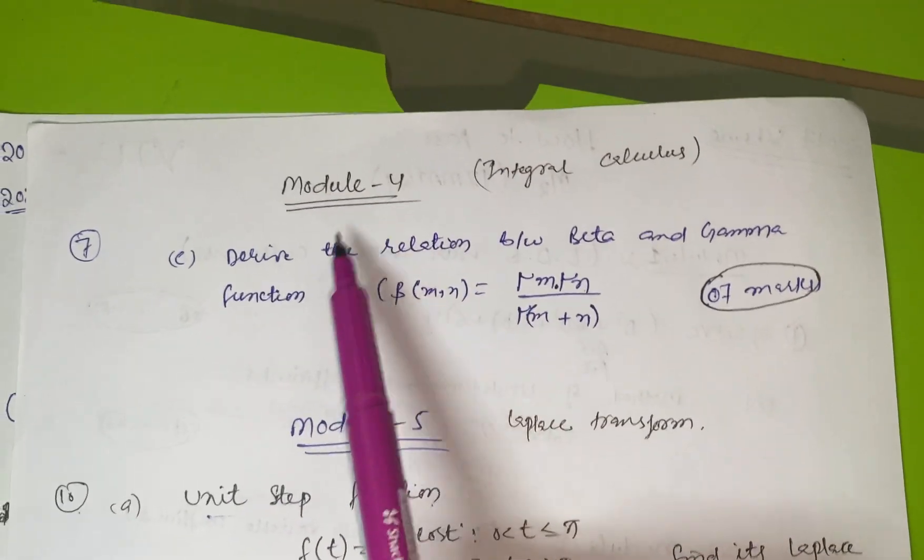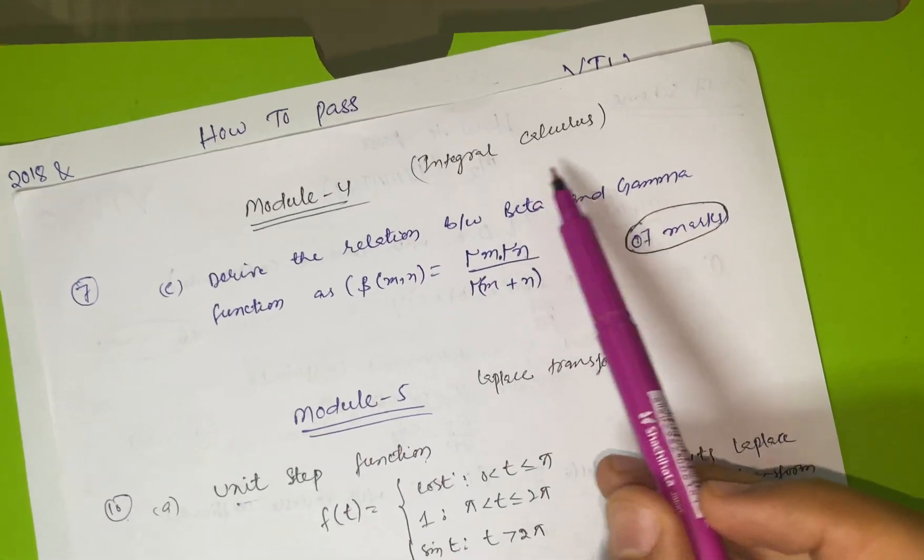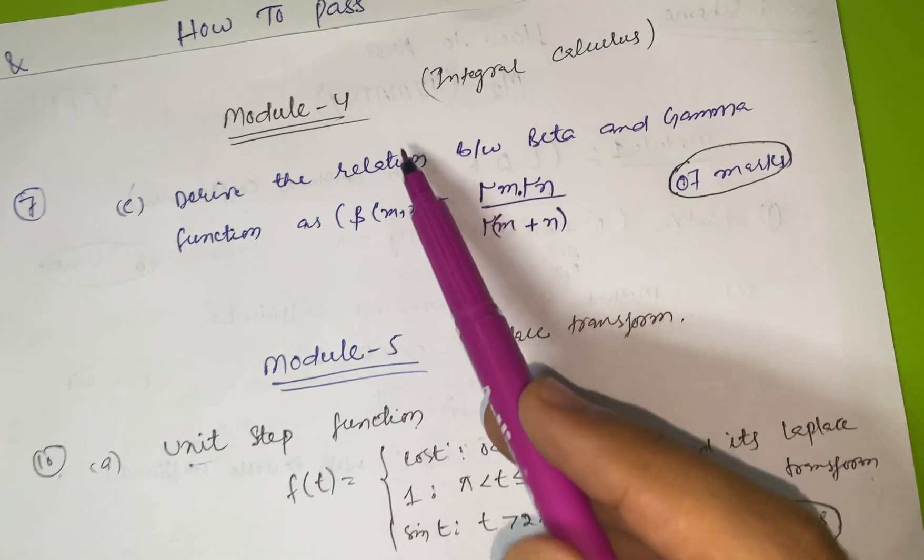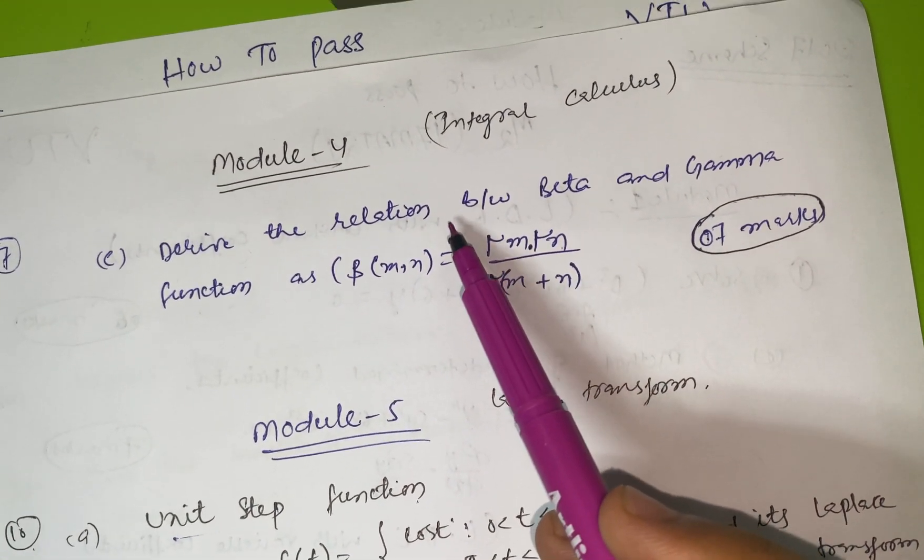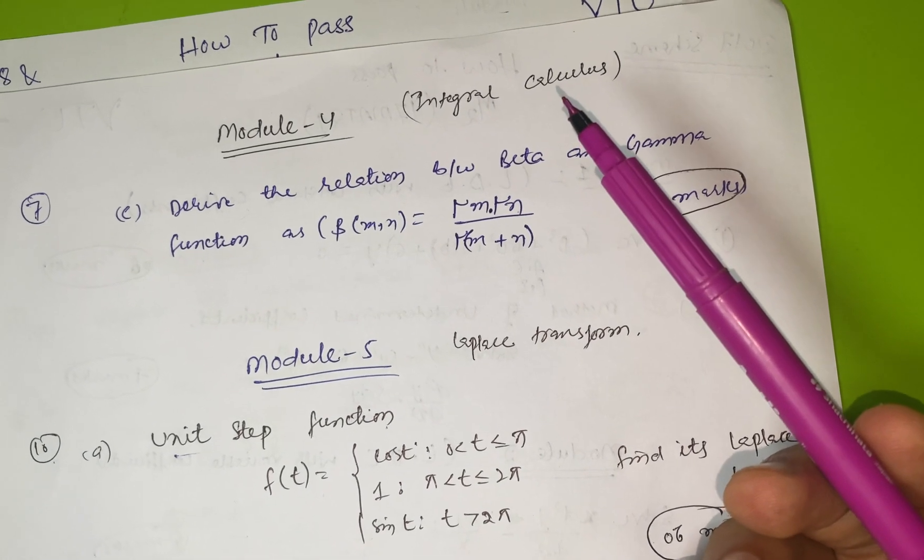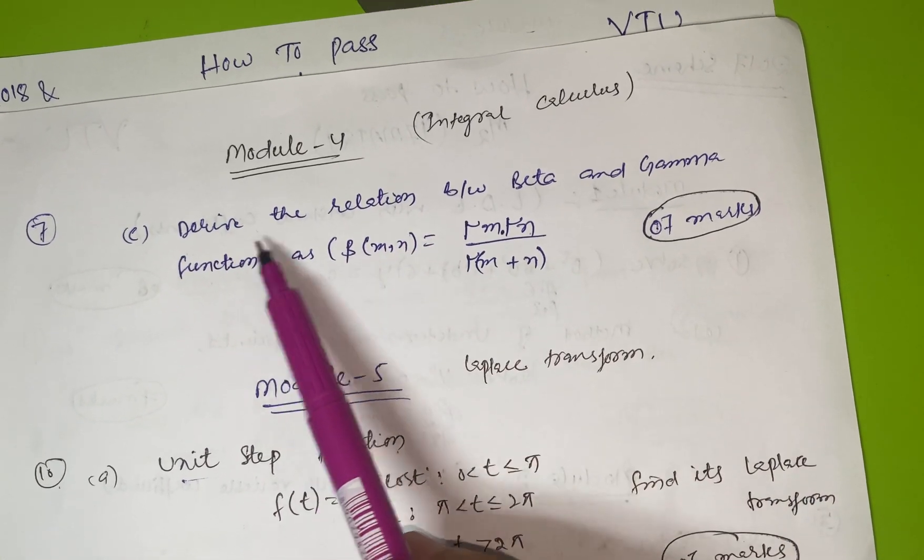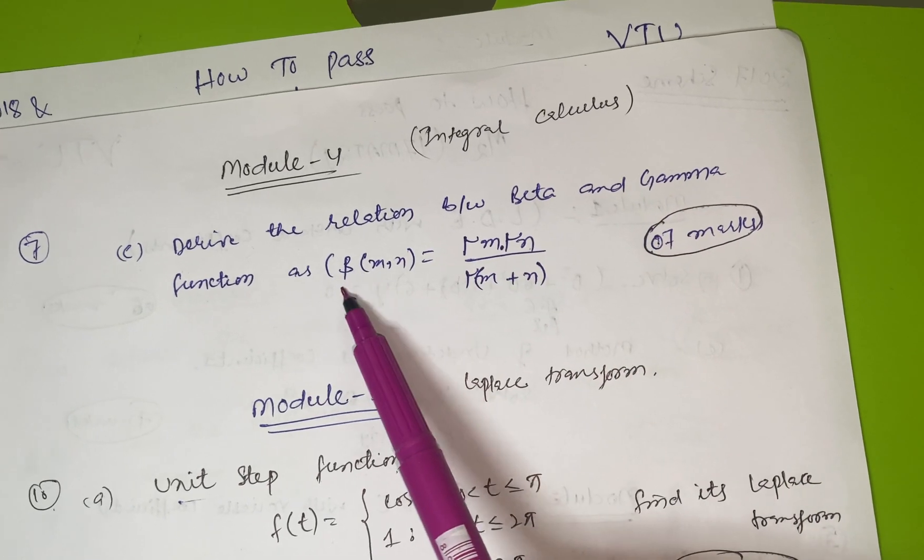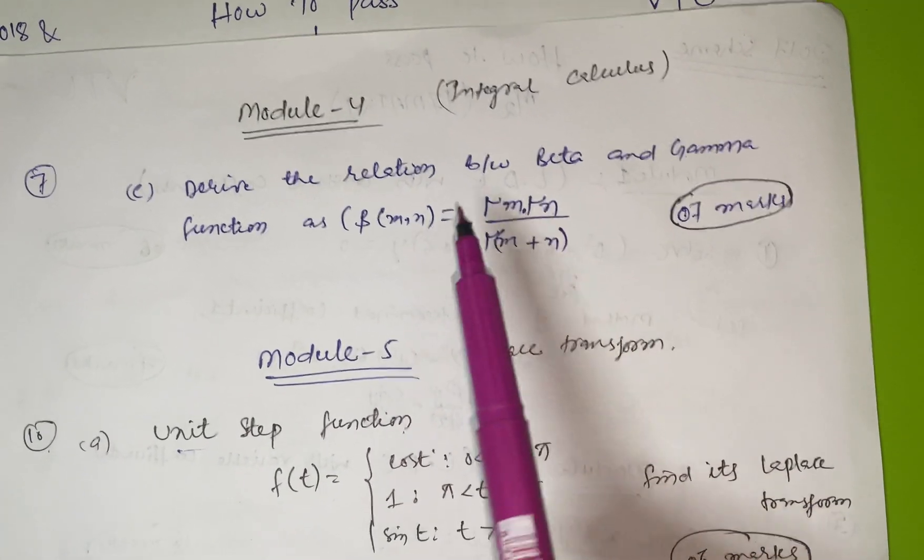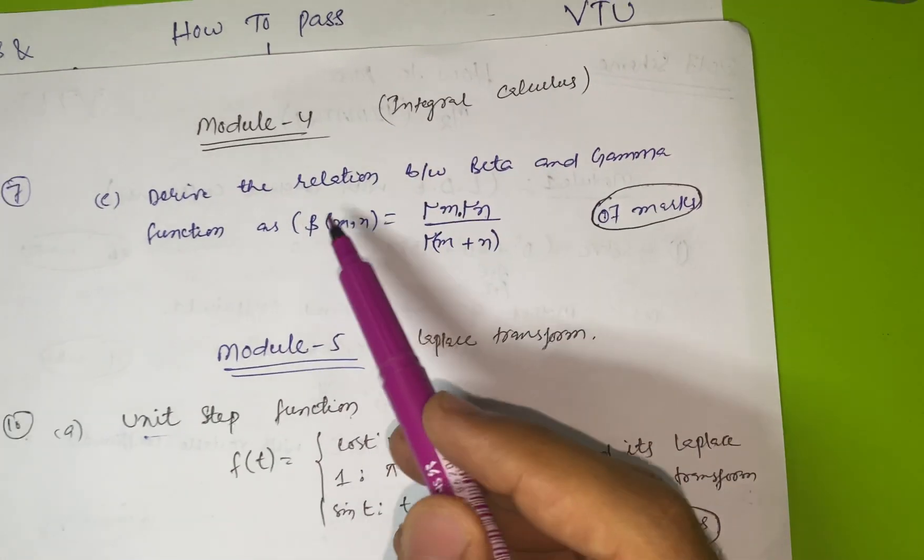Then come to Module 4. There are two parts, one is integral calculus. In this part there are two topics: double and triple integration, but I haven't written it here because it's a typical topic for some students. I've taken one part, that is gamma function. It's always asked in VTU examination: derive the relation between beta and gamma function as β(m,n) = Γ(m)Γ(n)/Γ(m+n). It carries seven marks. This will be a definite question from this module, so I've taken only one question from Module 4.